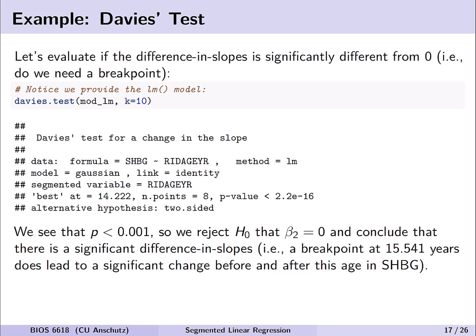Our next step is to ask: do I need this model or should I fit the simpler one? It's easy to use Davies' test within segmented. Rather than providing the segmented object, Davies' test takes the null model with no or fewer breakpoints and asks if it's worth adding a breakpoint. We give it the lm object and specify k equals 10.